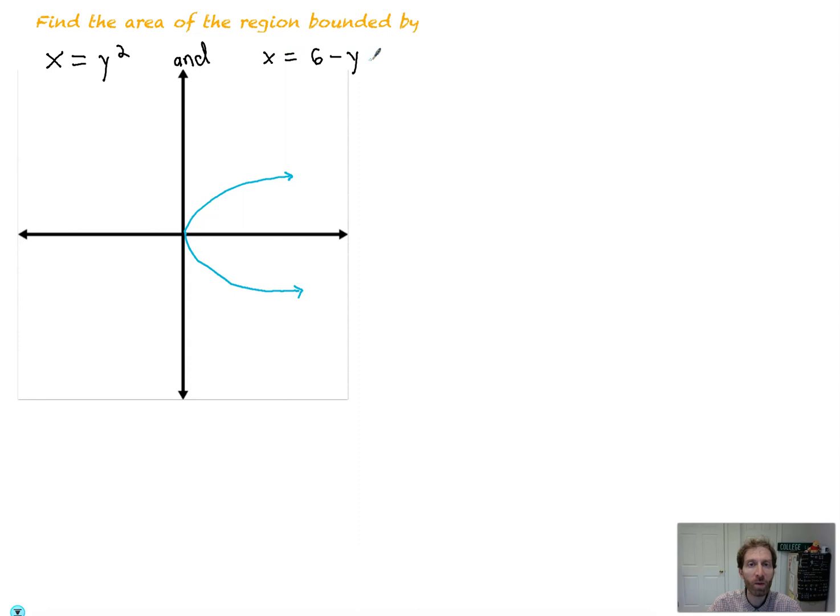X equals 6 minus y, what's that going to be? Well, it's pretty easy to solve out. We'll add y to one side, subtract x to the other, and you're really just graphing the line y equals 6 minus x, which is a slope of negative 1 and a y-intercept somewhere up here.